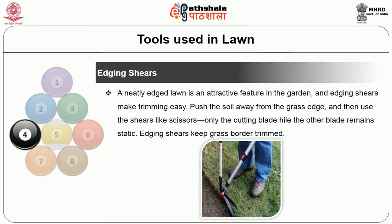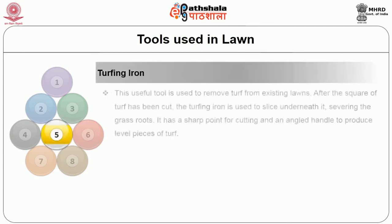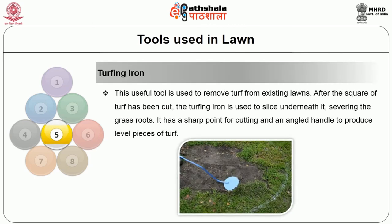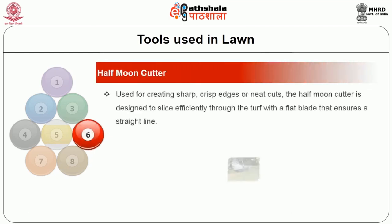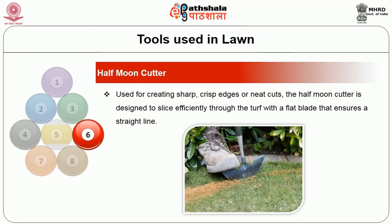Edging shears: a neatly edged lawn is an attractive feature in the garden and edging shears make trimming easy. Push the soil away from the grass edge and then use the shears like scissors. Once the cutting blade moves, the other blade remains static. Edging shears keep grass borders trimmed. Then the turfing iron, a useful tool used to remove turf from existing lawns. After the square of turf has been cut, the turfing iron is used to slice underneath it, severing the grass roots. It has a spear point for cutting and an angled handle to produce a level piece of turf. Half moon cutter: used for creating sharp, crisp edges or neat cuts, the half moon cutter is designed to slice efficiently through the turf with a flat blade that ensures a straight line.